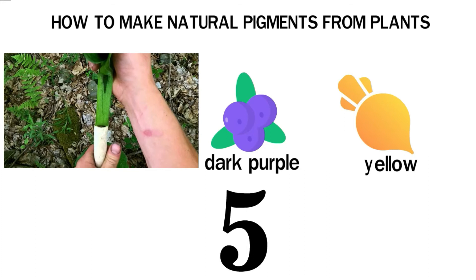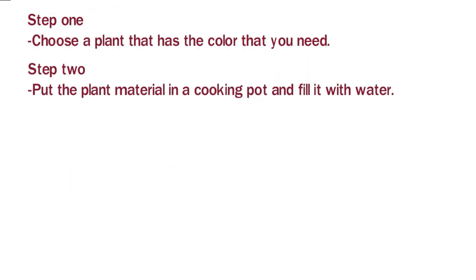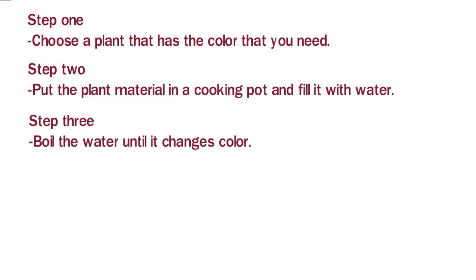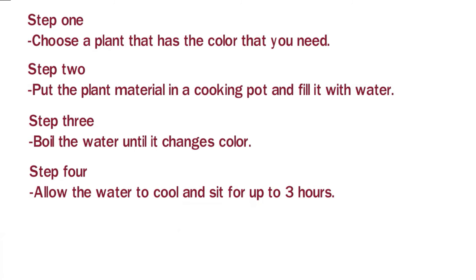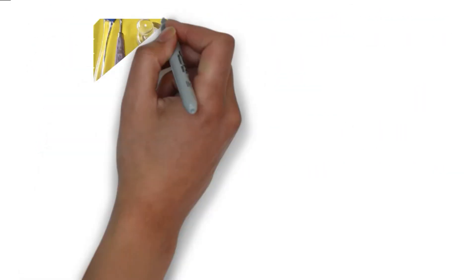You can use just about any type of plant when making natural pigments. Step one: choose a plant that has the color you need. Step two: put the plant material in a cooking pot and fill it with water. Step three: boil the water until it changes color. Step four: allow the water to cool and sit for up to three hours. Step five: transfer the colored water into the container you intend to use for painting.